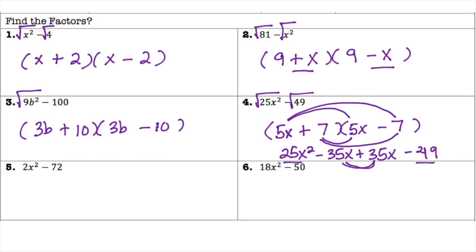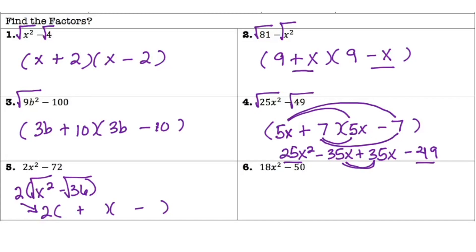For number 5, the terms are not perfect squares as written, but there is a minus sign. We do have a GCF between 2 and 72, which is 2. Pulling out that 2 leaves us with x squared minus 36 — and now both terms are perfect squares. Set up parentheses, keep the 2 out front, take the square root of x squared (which is x) and the square root of 36 (which is 6), giving 2(x + 6)(x - 6). When you have a GCF, take it out first and then apply difference of squares.